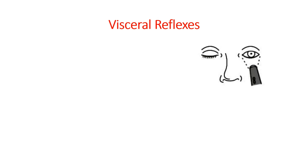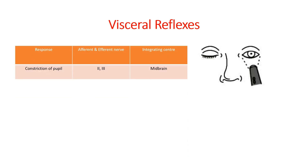Now let's see the visceral reflexes. Here the example is the light reflex. We'll focus a bright light of a torch on one side of the eye of the individual. The response is constriction of the pupil, and the integrating center involved is the midbrain.